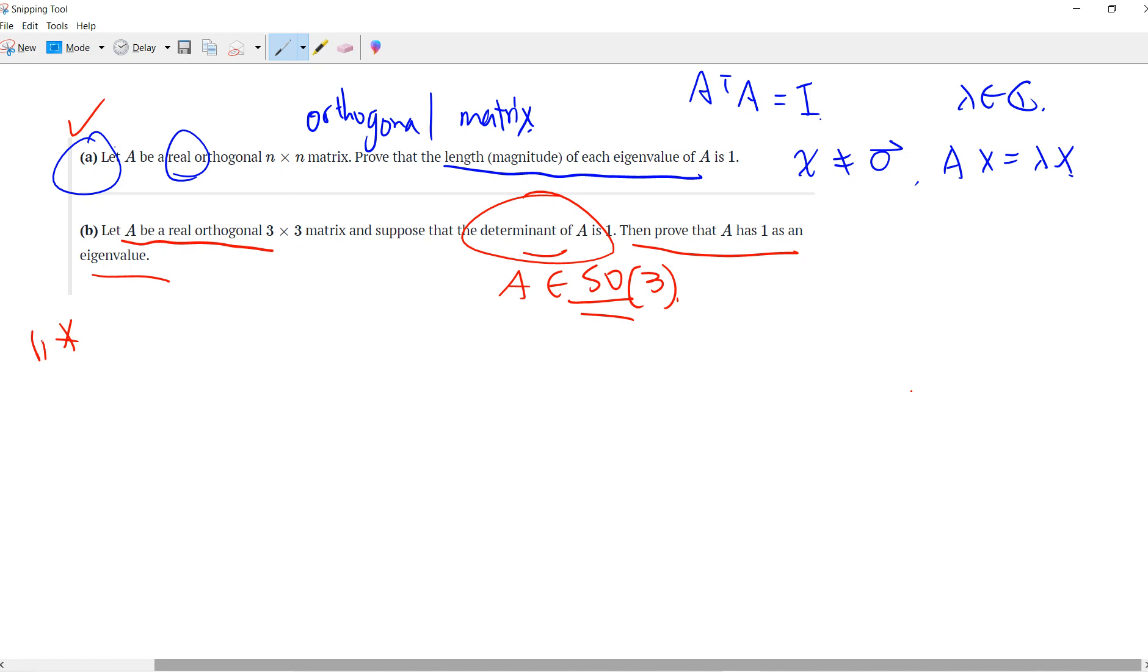The proof: recall that when we do the eigenvalue, we use A minus lambda I equals zero. If you write it down, you get something like this.